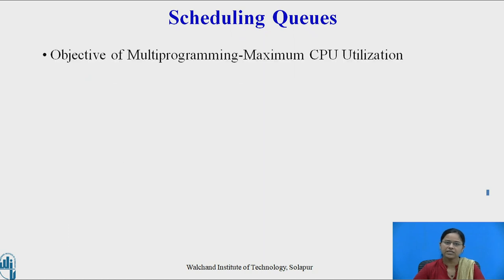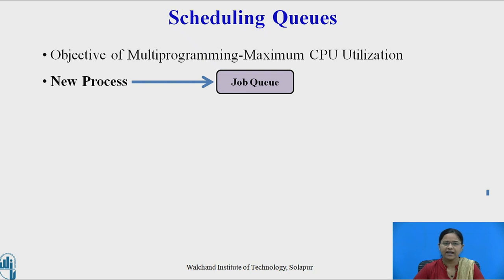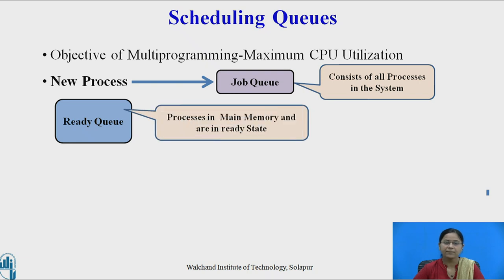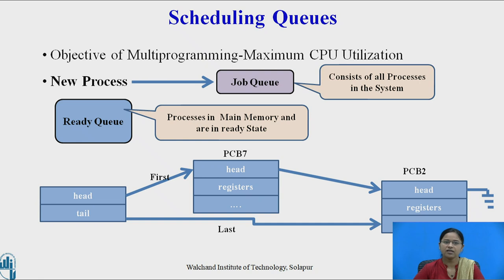The objective of multiprogramming is to maximize CPU utilization. For this purpose, a number of processes must be present in the system. Whenever a new process enters the system, it is added into the job queue. The job queue contains all processes present in the system. Processes that are ready for execution and present in memory are kept in the ready queue. The ready queue is represented as a linked list with two pointers — head and tail. Head points to the first PCB, tail points to the last PCB, and each PCB points to its next PCB.